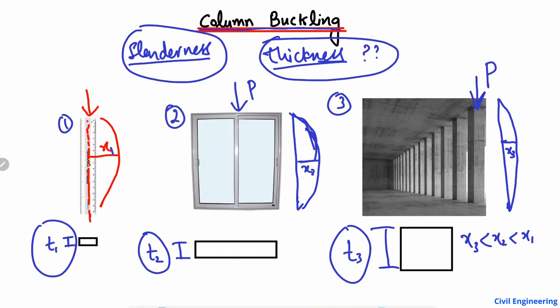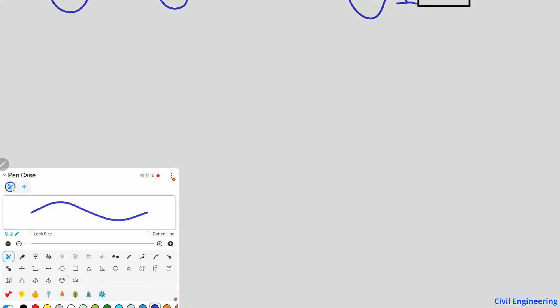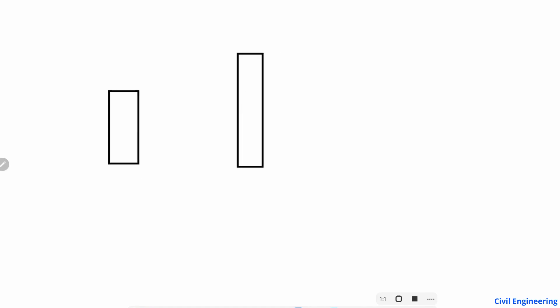Slenderness means how thin the material is — the thinner the material, the more buckling will occur. Now, the other parameter I want to explain is the effect of height. Let me draw three different columns: this is the first column, the second column, and the third column.